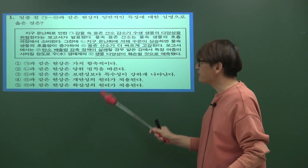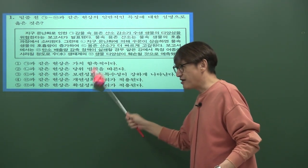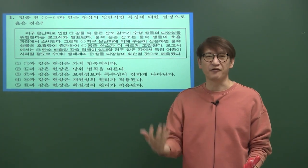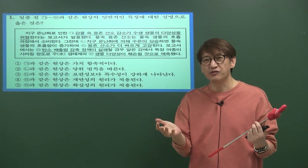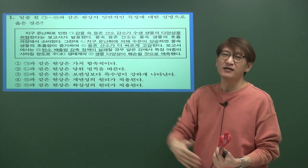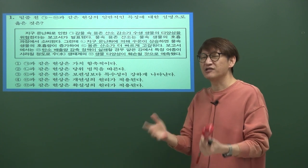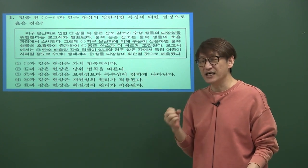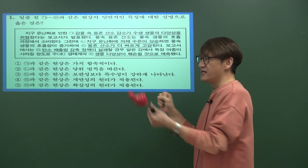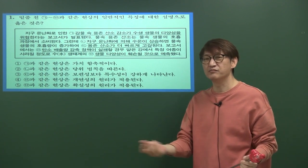1번 문제의 패턴은 자연현상과 사회문화현상의 차이점에 대해 고르는 것입니다. 자연현상은 지구 내부적인 힘 또는 외부적인 힘에 의해 만들어진 현상이고, 사회문화현상은 인간이 만들어낸 문화입니다. 그 두 현상의 차이점을 비교해서 묻는 문항이 바로 1번 문제입니다.